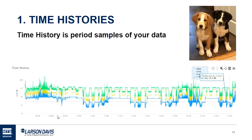So, time history — what is it? It's a period of samples of data. When you have one-second samples, each sample of data is one second long with all the user-specified metrics for that second. This is a measurement I did of my new puppies — I had the 831C sound level meter in my kitchen during the day while I was at work. I wanted to know the puppy schedule: each second throughout the day I get a snapshot of sound. You can tell when they sleep and when they are awake, and there's a time in the afternoon around 2 p.m. when they get really rowdy.